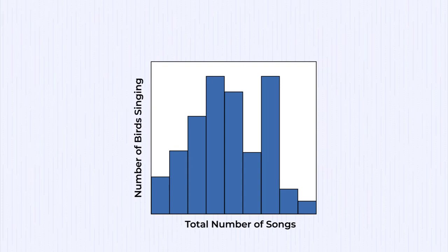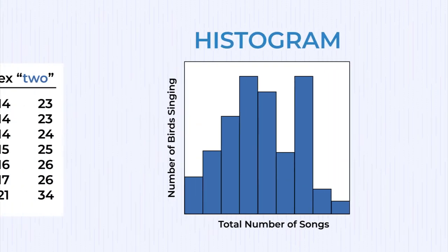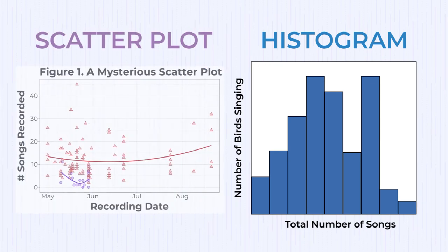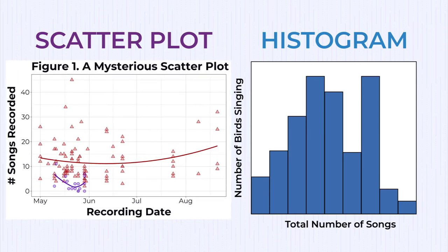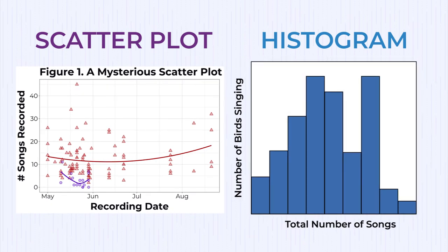In the next section, you're going to learn about the histogram. You'll use the same data from our study to generate the figure the reviewer suggested and try to decide which one is better. Will we stick with the scatter plot over the histogram? You decide.